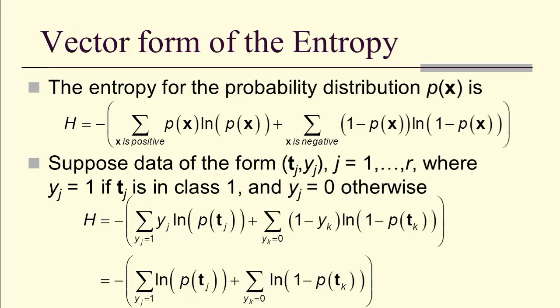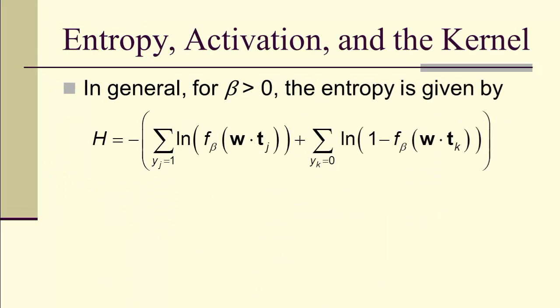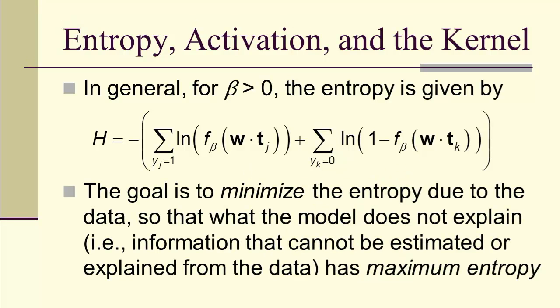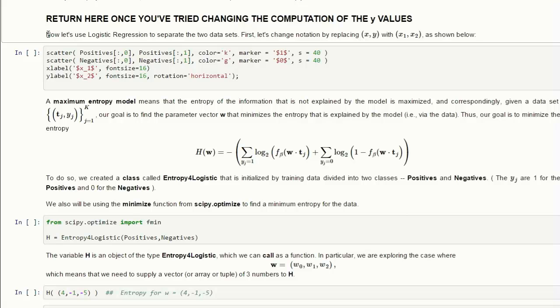When we simplify that, we're looking over where y_j equals 1 and where y_k equals 0 for the two different classes. That's just this double sum or sum of logarithms over where y_j is 1 and where y_j is 0. In general, for beta greater than 0, this is our entropy. If beta is 1, we have the original entropy. What we want to do is minimize the entropy due to the data, which will maximize the entropy for what is not explained by the data.